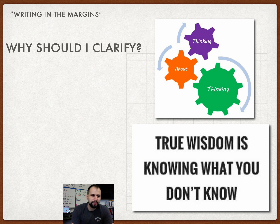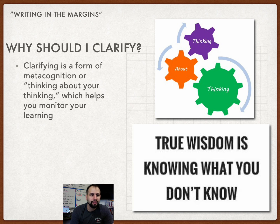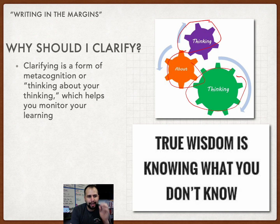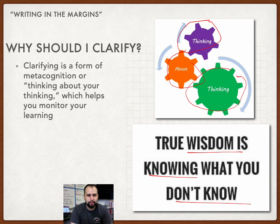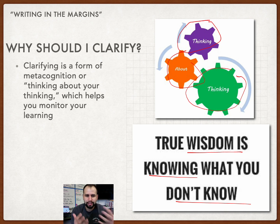Why should you use it? Well, clarifying is a form of metacognition — that's thinking about thinking. As you're reading, you help yourself understand by monitoring what you are having trouble with. It kind of goes along with this quote: true wisdom is knowing what you don't know. So instead of just skimming over the part you're a little bit confused about, you go back, reread, and look for context clues to get a deeper understanding.